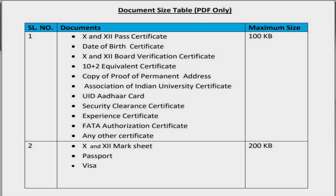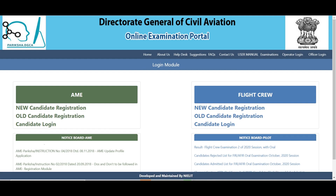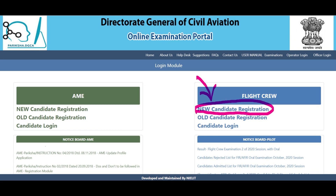You need to have the following documents before applying. Let's see the step-by-step process to apply for a computer number. First, click the link in the description. You will be directed towards a website, and since you are studying to be a pilot, you need to click New Candidate Registration under Flight Crew.